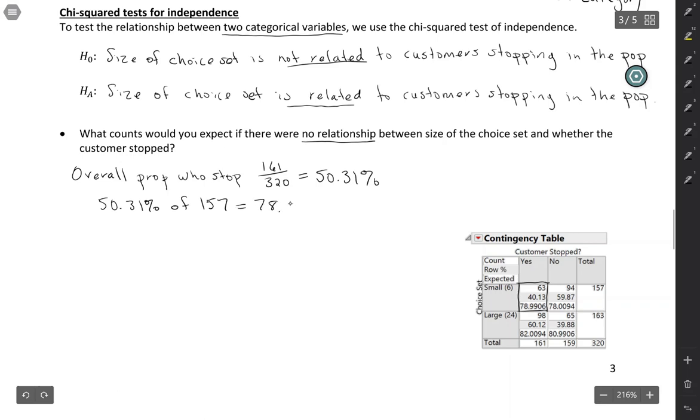So 50.31% of 157 would be 78.99. And this would be the number we'd expect to stop in the small choice set group.